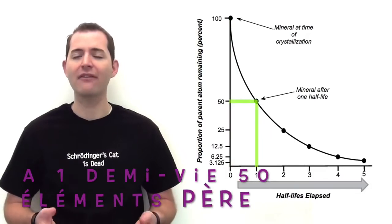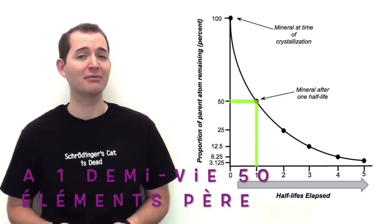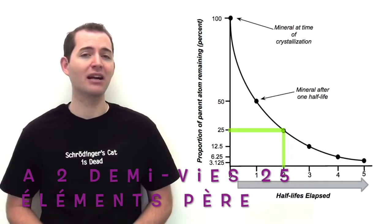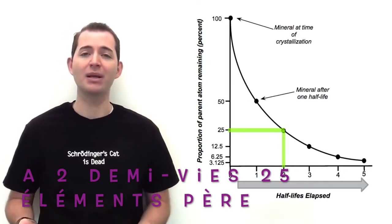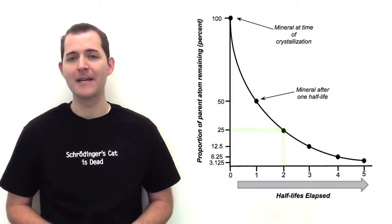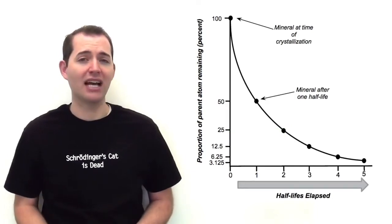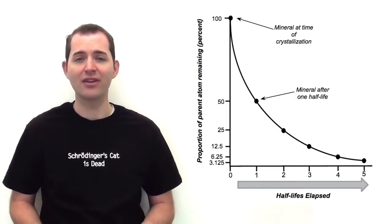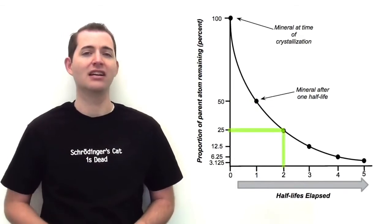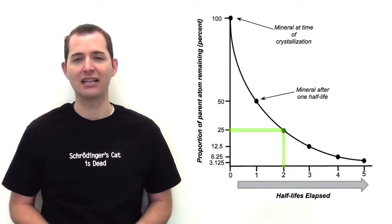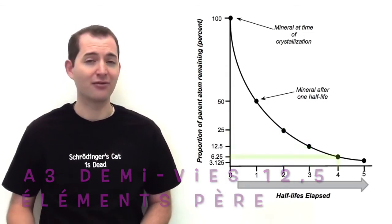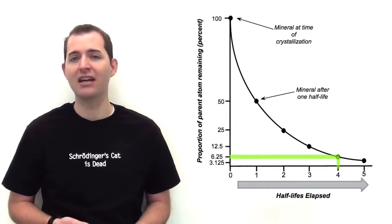At one half-life, half of those parent atoms would have decayed into daughters, so our percentage of parent atoms would be 50%. After the second half-life, that 50% of parent atoms would have decreased by half, so it would now be 25% of the original parent atoms, and all the rest have turned into daughter atoms. Continuing this pattern: after three half-lives, there are 12.5% of the parent atoms remaining, and after four half-lives, there are 6.25% of the parent atoms remaining.